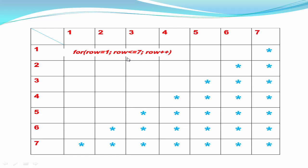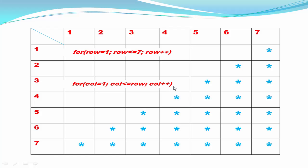You can see here we print multiple stars in each row. In the second row we print two stars, in the third row we print three stars — printed in three different columns. Similarly, in the fourth row, four stars are printed in four different columns. So to print multiple columns in each row we need another loop: for column equal to 1, column less than or equal to row, then column plus plus.